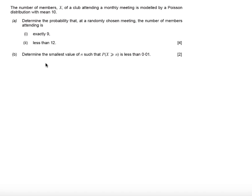In this question, we're told the number of members X of a club attending a monthly meeting is modeled by a Poisson distribution with mean 10. Part A says to determine the probability that at a randomly chosen meeting the number of members attending is...